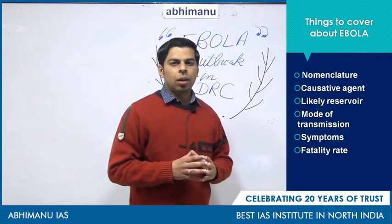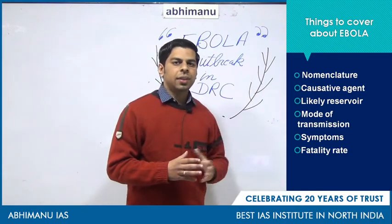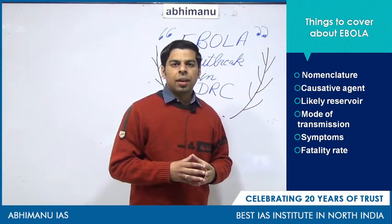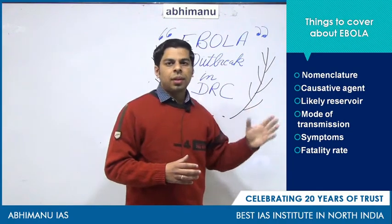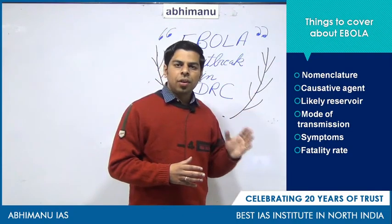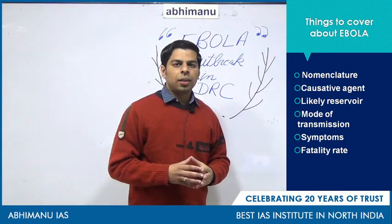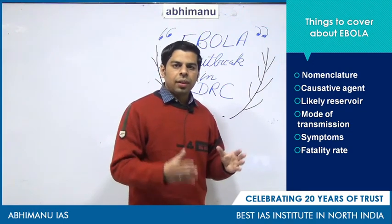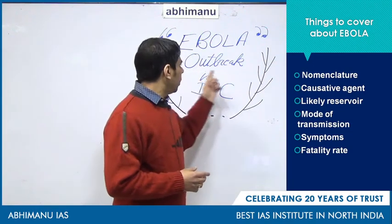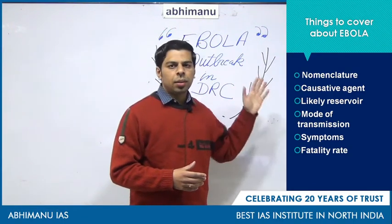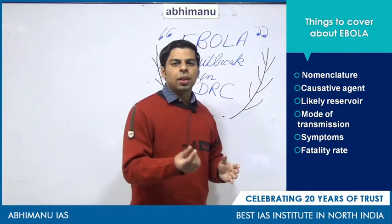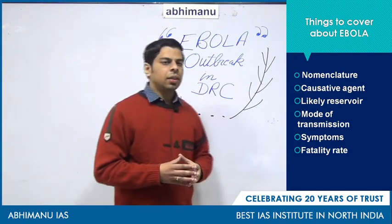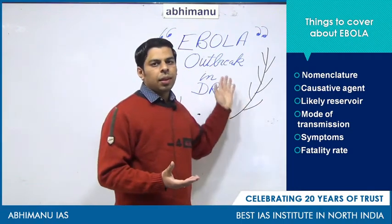Let us start with the basics of Ebola. The word 'Ebola' has a geographical inclination — it is named after a river in Congo. In 1976, this virus was first detected in that region in Congo itself, and the nomenclature was given from there. The current outbreak is taking place in Kivu province in the Democratic Republic of Congo. This is one of the rare viral diseases named after a river.